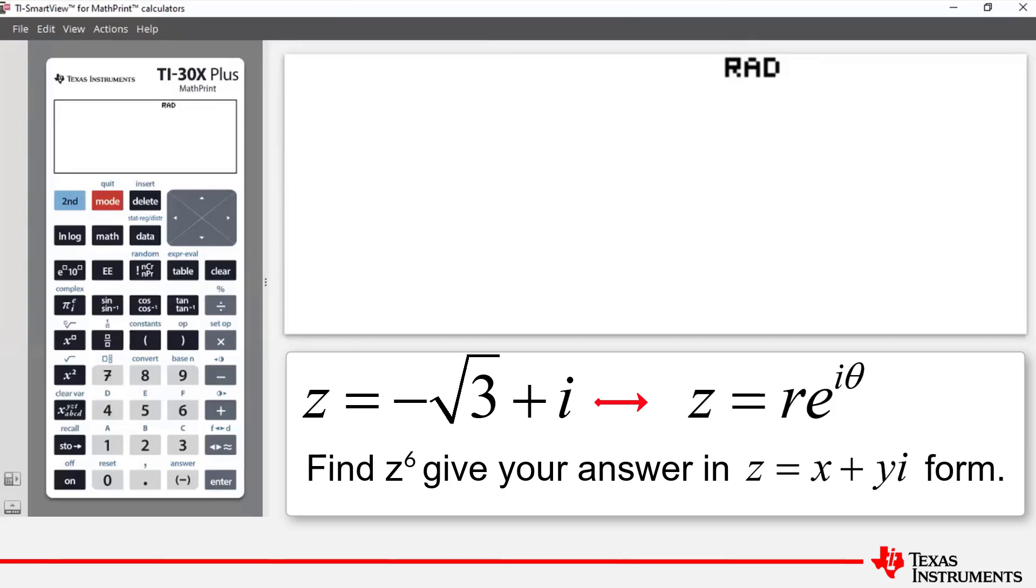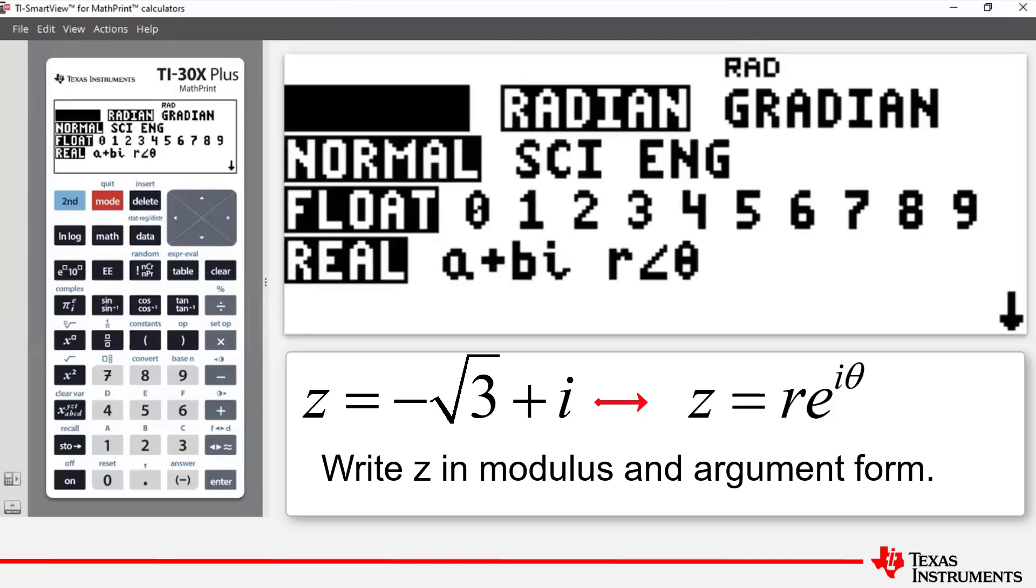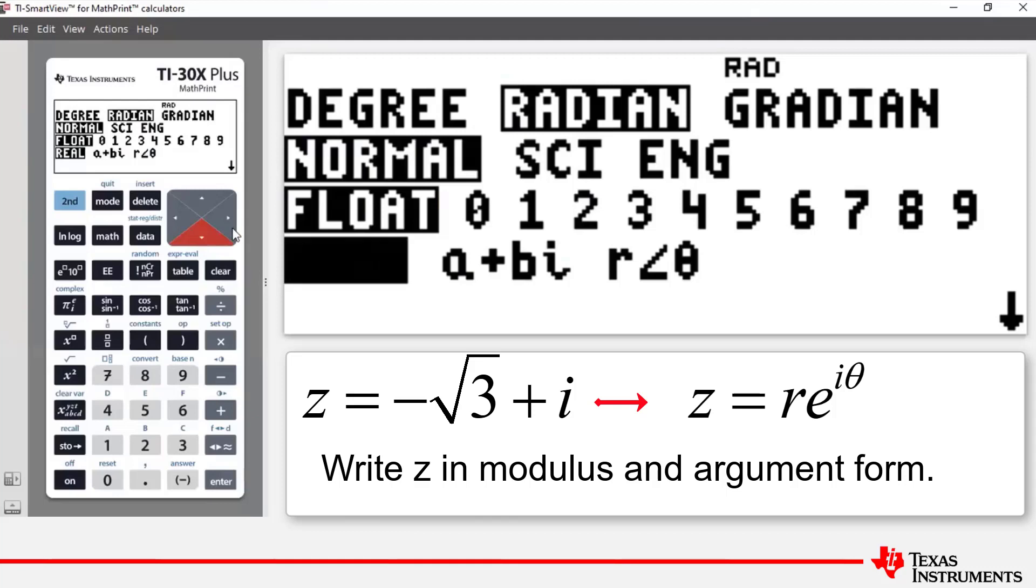I'm going to show you two ways to do part a. First of all, we need to ensure that we're in radians mode. We press mode and you can see there that we are in radians mode. We're going to arrow down to highlight real and then arrow across to highlight r angle theta. And this particular mode is our modulus argument or polar form mode. Press enter.